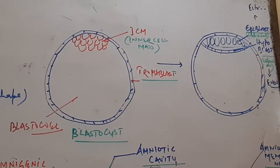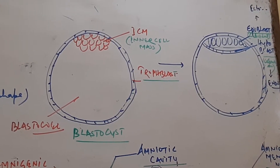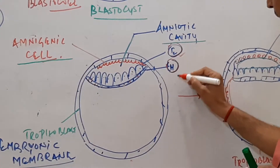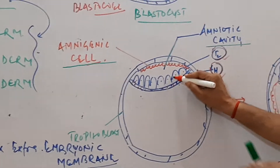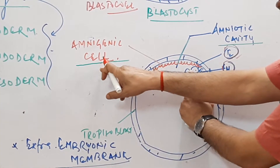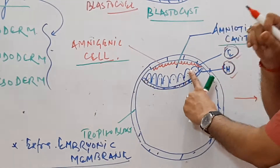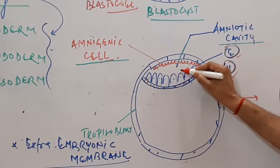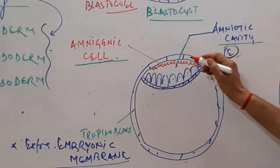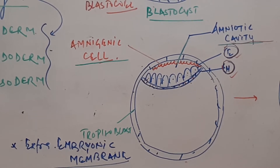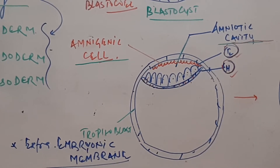Now what changes occur in epiblast and hypoblast? Between the epiblast and trophoblast cells, near the trophoblast, there are cells called amniogenic cells. Between the amniogenic cells and epiblast cells, a cavity is formed — that cavity or space is called the amniotic cavity. The amniotic cavity gets enlarged and is surrounded by a membrane called the amniotic membrane.